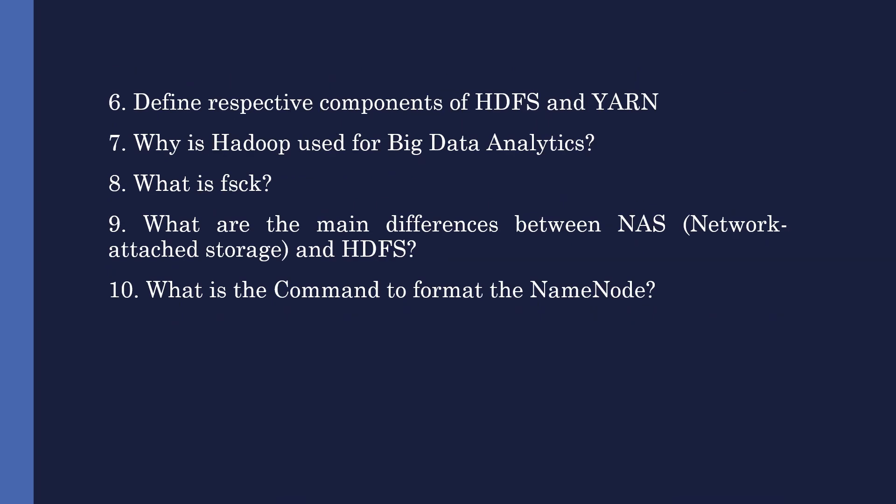The next question is: define the components of HDFS and YARN. HDFS has two main components. The first is the name node, which is a master node that processes metadata information for data blocks present in HDFS. The second is the data node, or slave node, which stores data and processes it as directed by the name node.